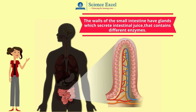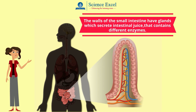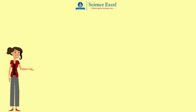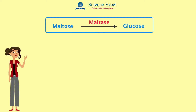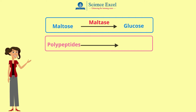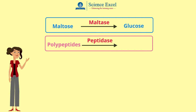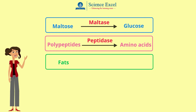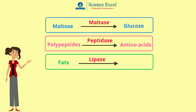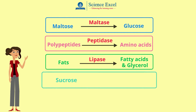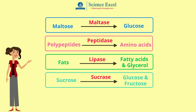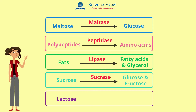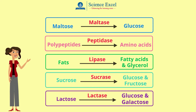These enzymes help in the further breakdown of the different nutrients which have come from the duodenum. Maltose is broken down by the enzyme maltase into glucose. The polypeptides are broken down by peptidase into amino acids, and the remaining fats are digested by lipase into fatty acids and glycerol. Sucrose is broken down by the enzyme sucrase into glucose and fructose, and lactose is broken down by lactase into glucose and galactose.